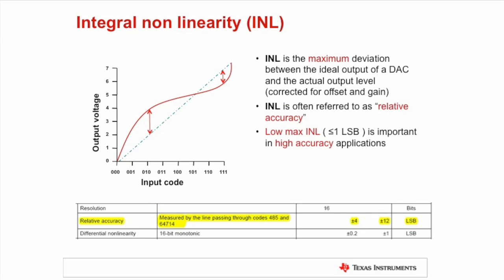Integral non-linearity is very similar to differential non-linearity, except rather than a code-to-code measurement, INL is the integration of all DNL measurements. Think of it as the result of all DNL errors stacked up on top of one another.